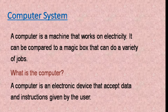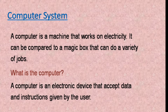A computer is a machine that works on electricity. It can be compared to a magic box that can do a variety of jobs. Computers are not used in offices only — they can be seen everywhere around you, such as shops, schools, hospitals, banks, airports, railway stations, etc. They work very fast and give hundred percent accurate results.